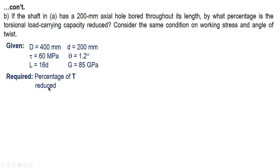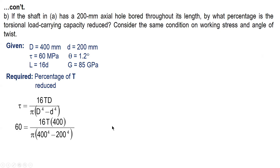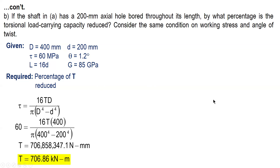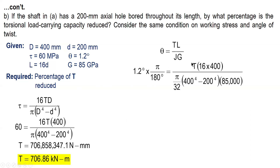Using the stress formula for a hollow shaft with all known values substituted except T, and converting to kilonewton-meters by moving the decimal six places to the left, we get 706.86 kilonewton-meters. For the angle of twist condition applied to the hollow shaft, solving gives T = 655.4 kilonewton-meters.